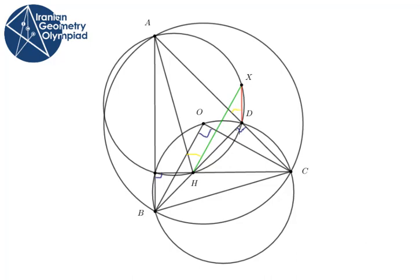Because angle ODC plus angle OBC is 180 degrees, we have angle ODA equal to angle OBC, which is 45 degrees.